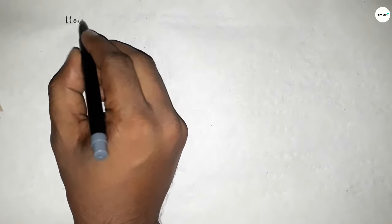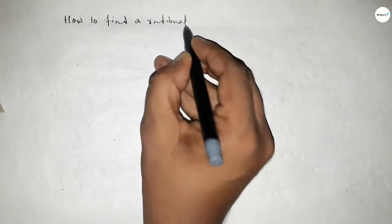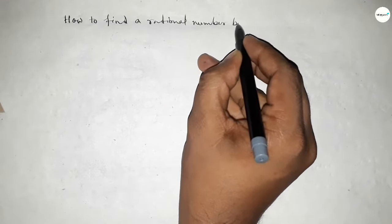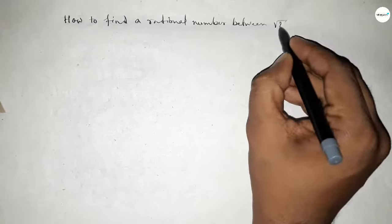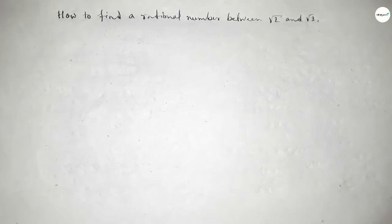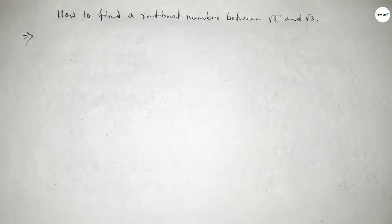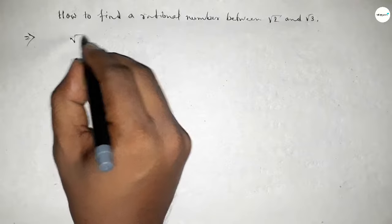Hi everyone, welcome to SSR Classes. Today in this video, we'll find a rational number between √2 and √3. Let's start the video. First of all, write down the value of √2 and √3.